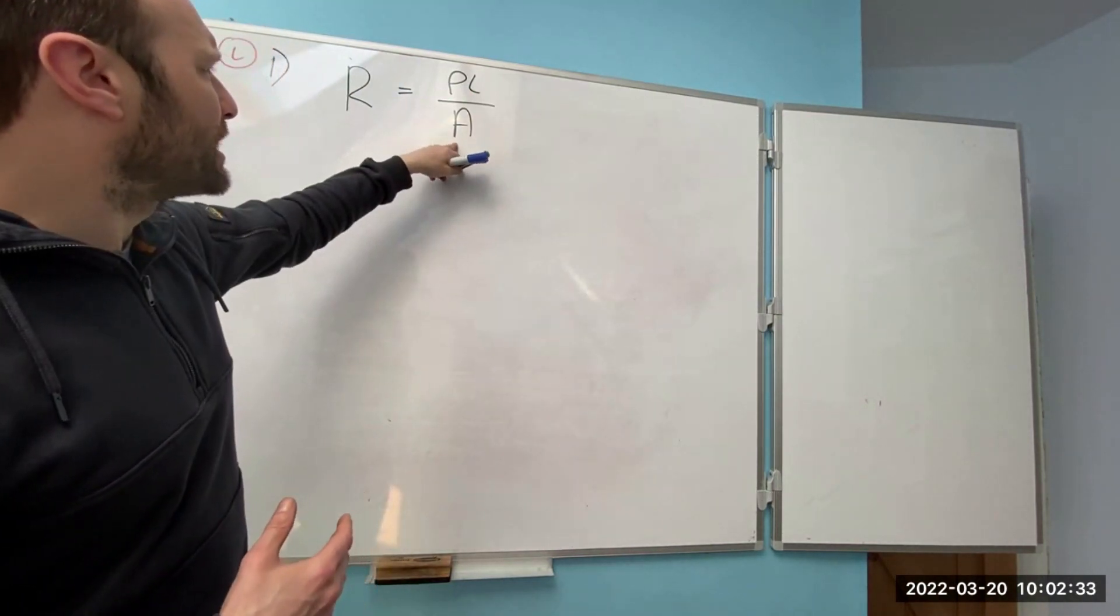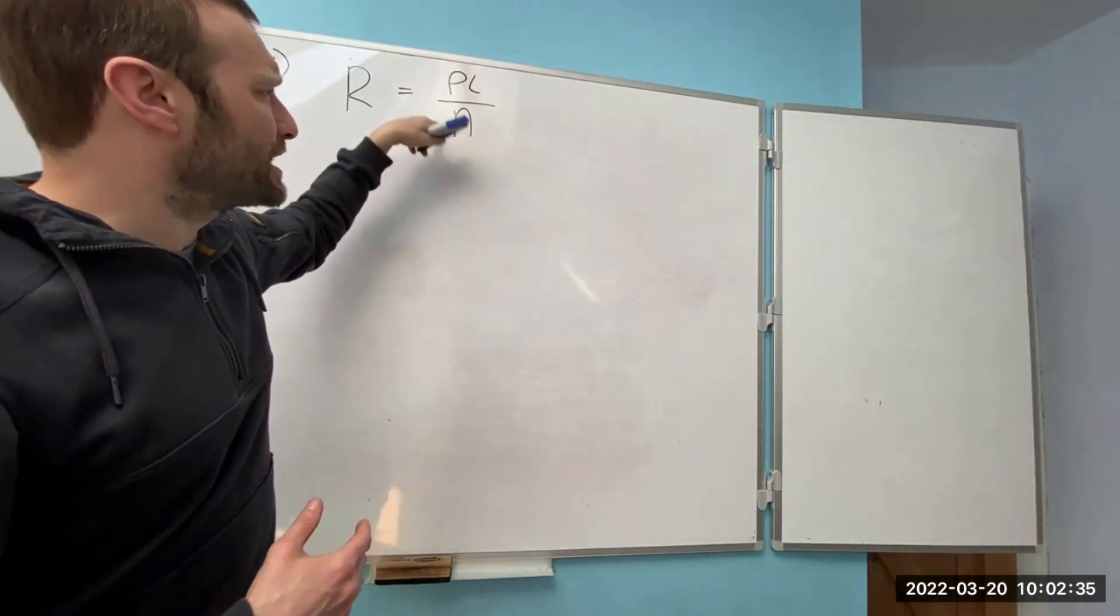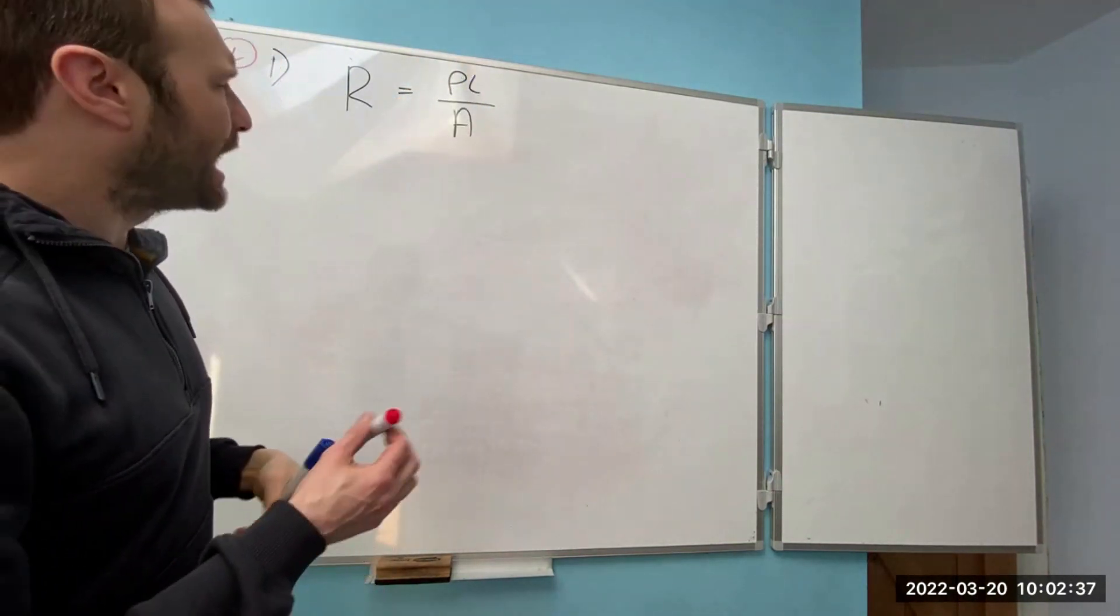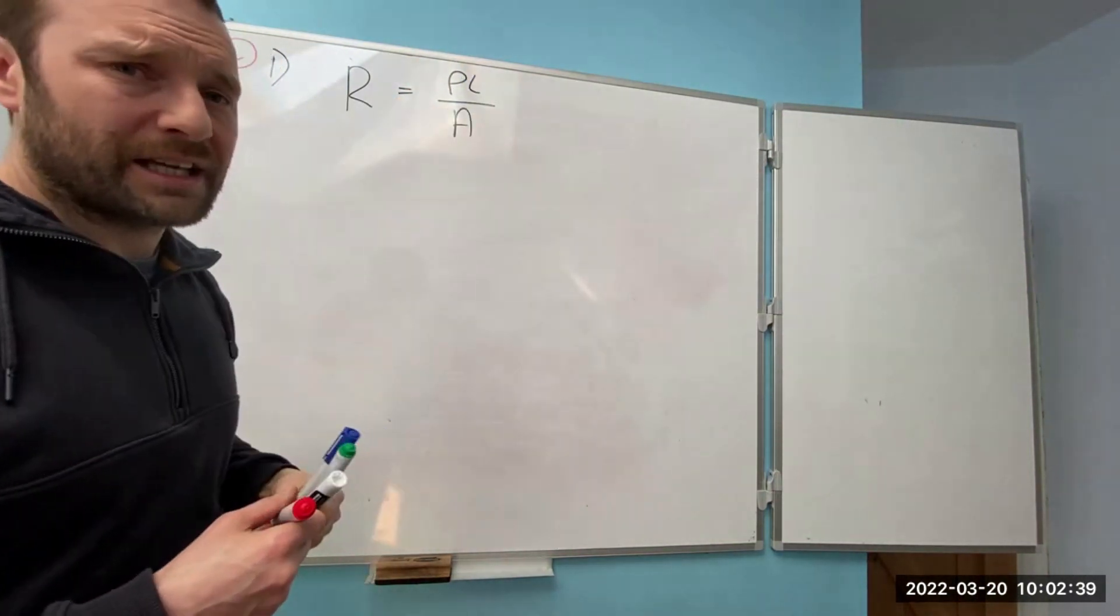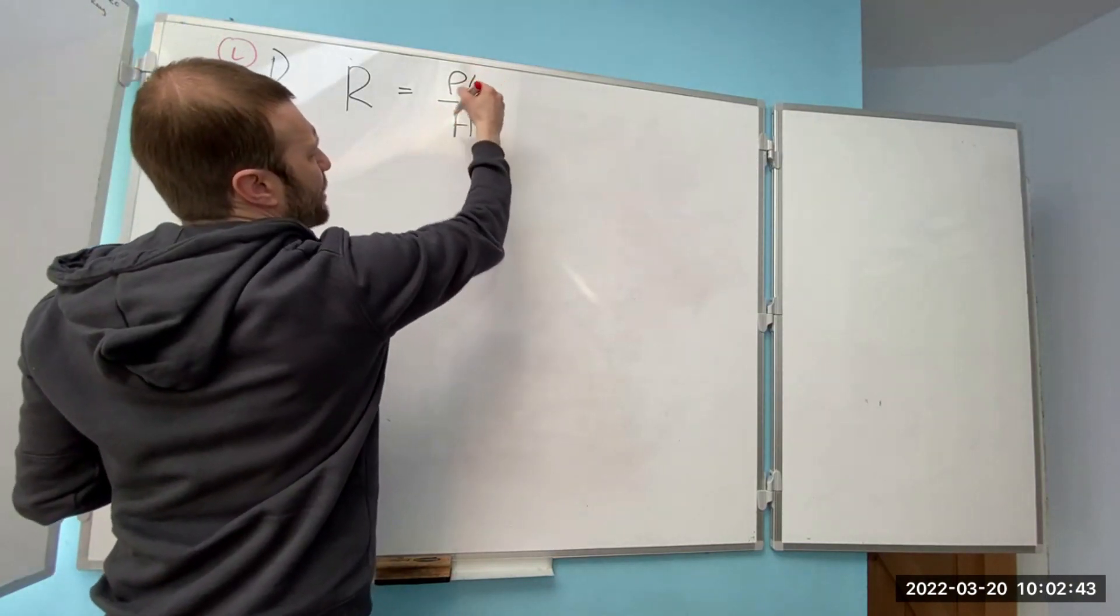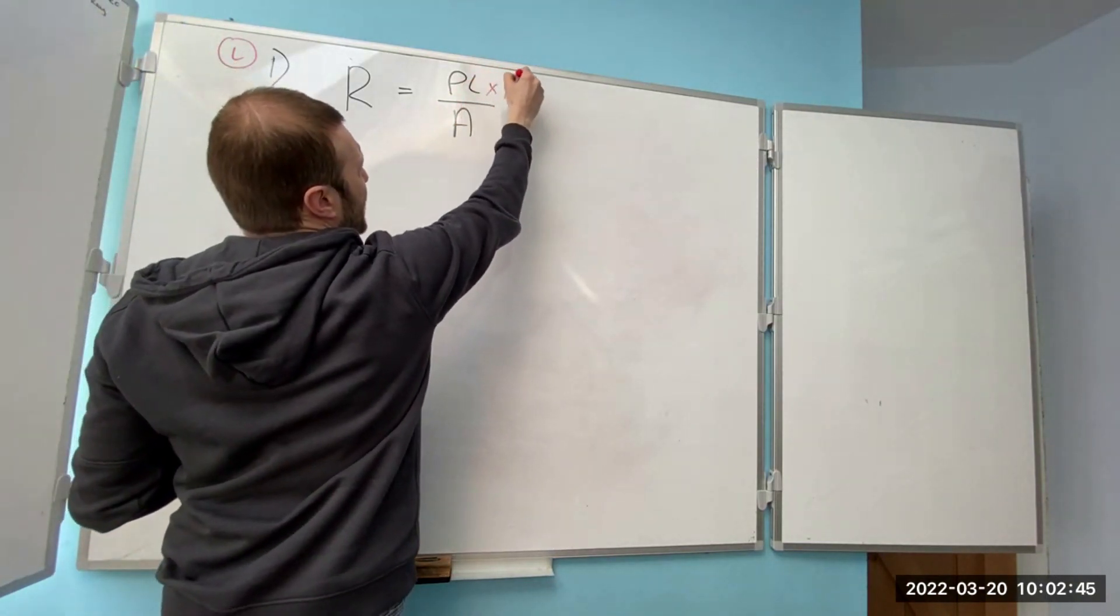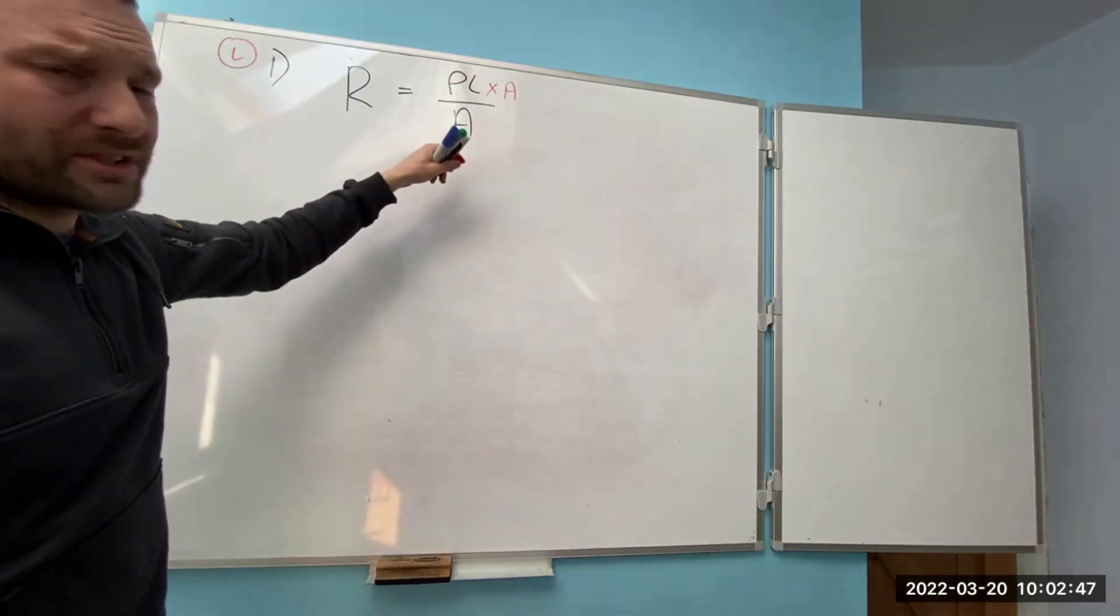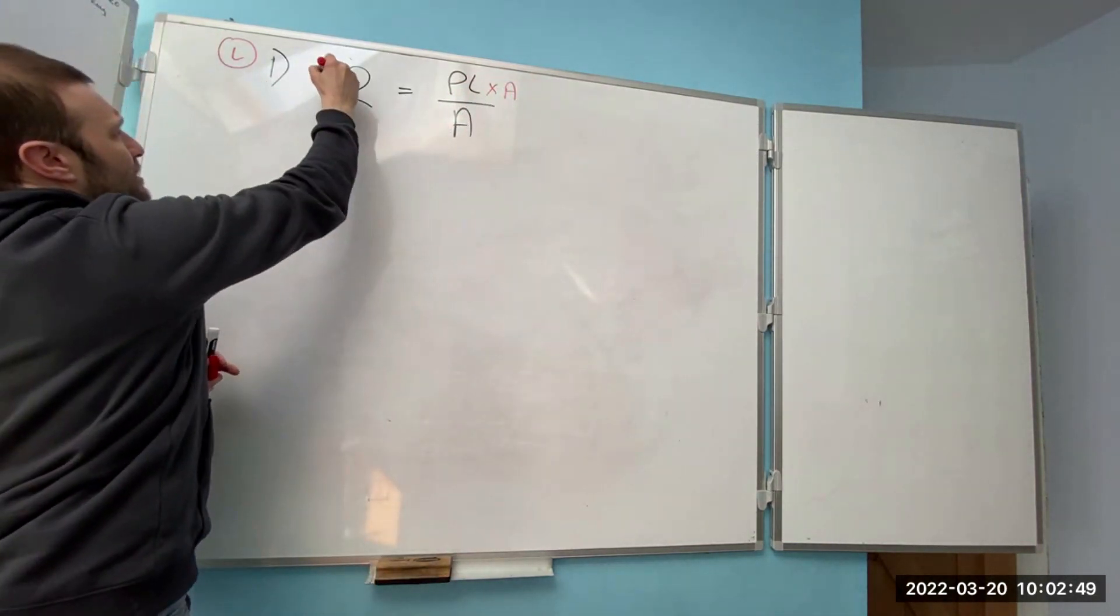But those of you that do, you should know by now that I can't do anything with this because it's a fraction and I need to remove the A and get it upstairs. So at the moment I've got ρL divided by A. I times the A out. Whatever I do that side I have to do to this side.